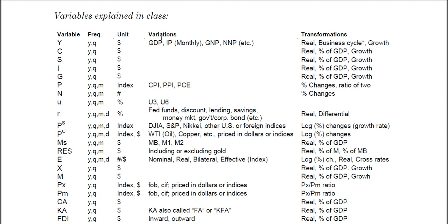If you want monthly data, you could use the Index of Industrial Production, which people use as a proxy variable that stands in for GDP. People could also use GNP or net national product, but for the most part you want GDP.